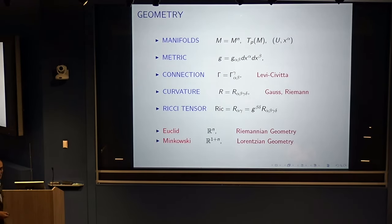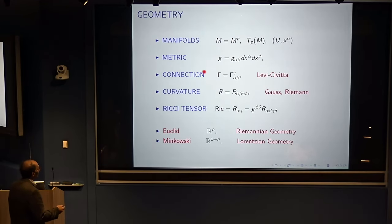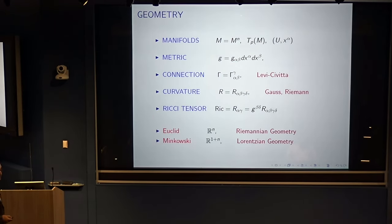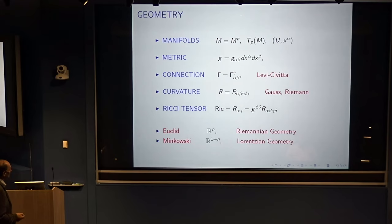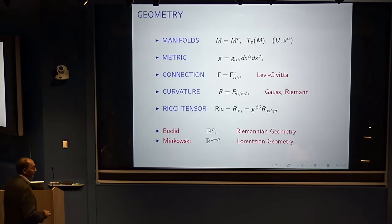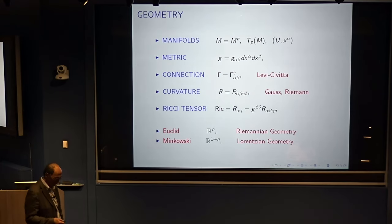Examples of this geometric structure include Euclidean space, the simplest possible Riemannian geometry. The difference between Riemannian geometry and Lorentzian geometry is that in Riemannian geometry, the metric is positive definite — the simplest being the Euclidean metric given by the Pythagorean theorem. Minkowski is slightly different: the metric is not positive definite but has signature minus, plus, plus, plus.